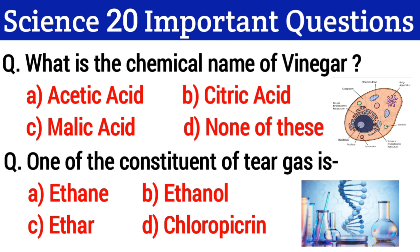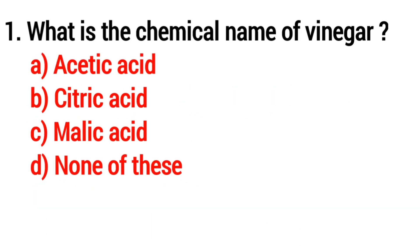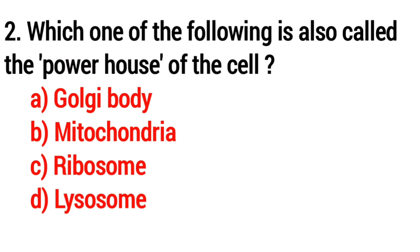Question number 1: What is the chemical name of vinegar? Option A: acetic acid, Option B: citric acid, Option C: malic acid, Option D: none of these. The correct answer is Option A: acetic acid.